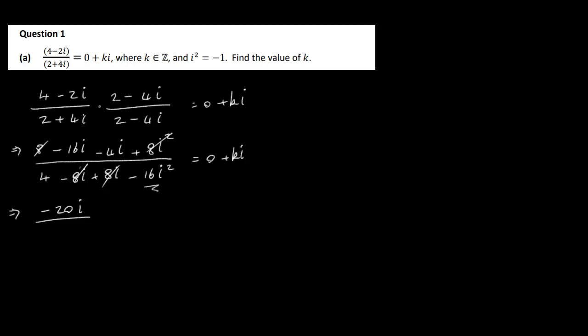On the bottom, we've got minus 8i plus 8i, which gives us 0. We also have i squared which is minus 1, so the minus 16i squared becomes plus 16, giving us 16 plus 4, which is 20. So that's minus 20i over 20, which is 0 plus ki — simplifying to minus i.